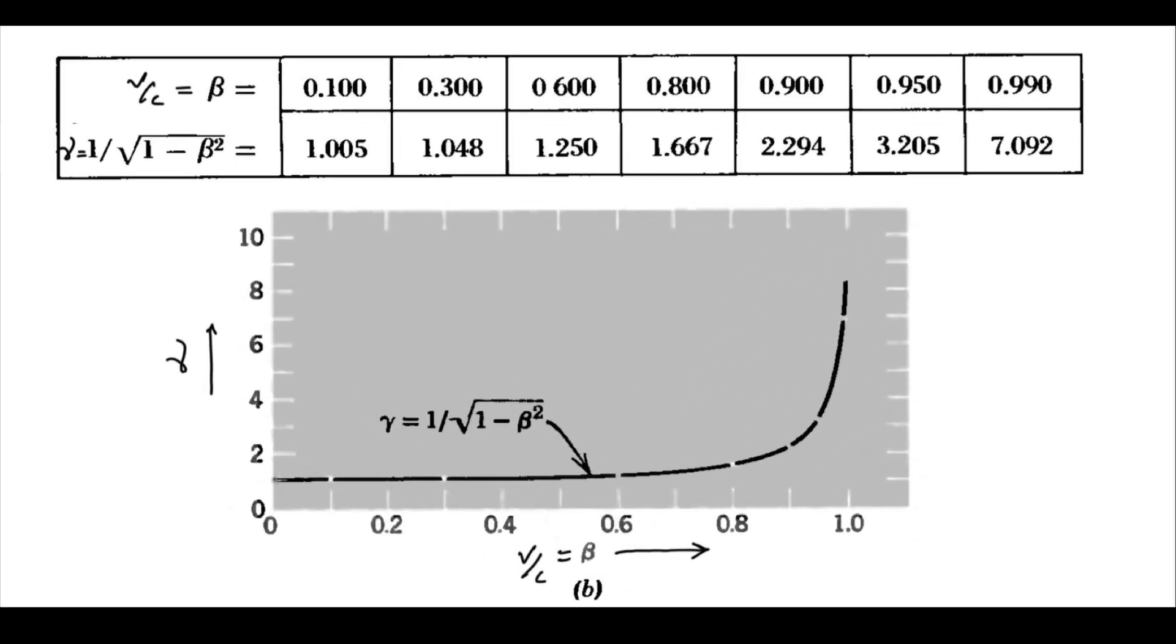See that the Lorentz factor is practically 1 until we are dealing with extremely high speeds like 40-50% of the speed of light. And even at 60%, gamma is just a notch bigger than 1.